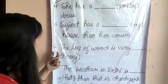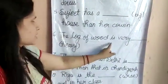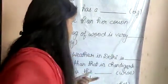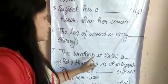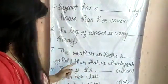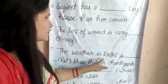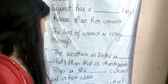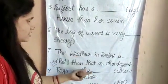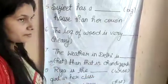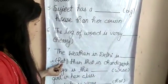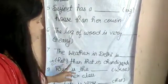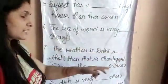Next है: The log of bird is very heavy — यहाँ 'heavy' ही रहेगा। Next है: The weather in Delhi is ___ hot than that in Chandigarh — यहाँ Delhi के weather की compare Chandigarh के weather से की गई है, यह comparative sentence है, इसलिए 'hot' का comparative 'hotter' होगा।